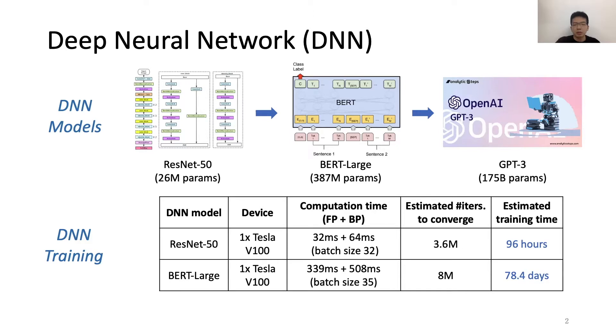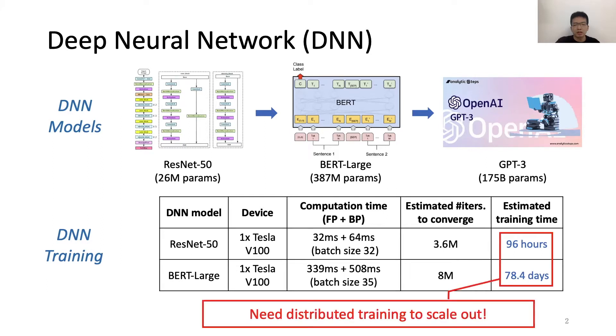For example, to train a BERT large model on one Tesla V100 GPU, the estimated time to converge is about 78 days. So in practice, we need distributed training to scale out.